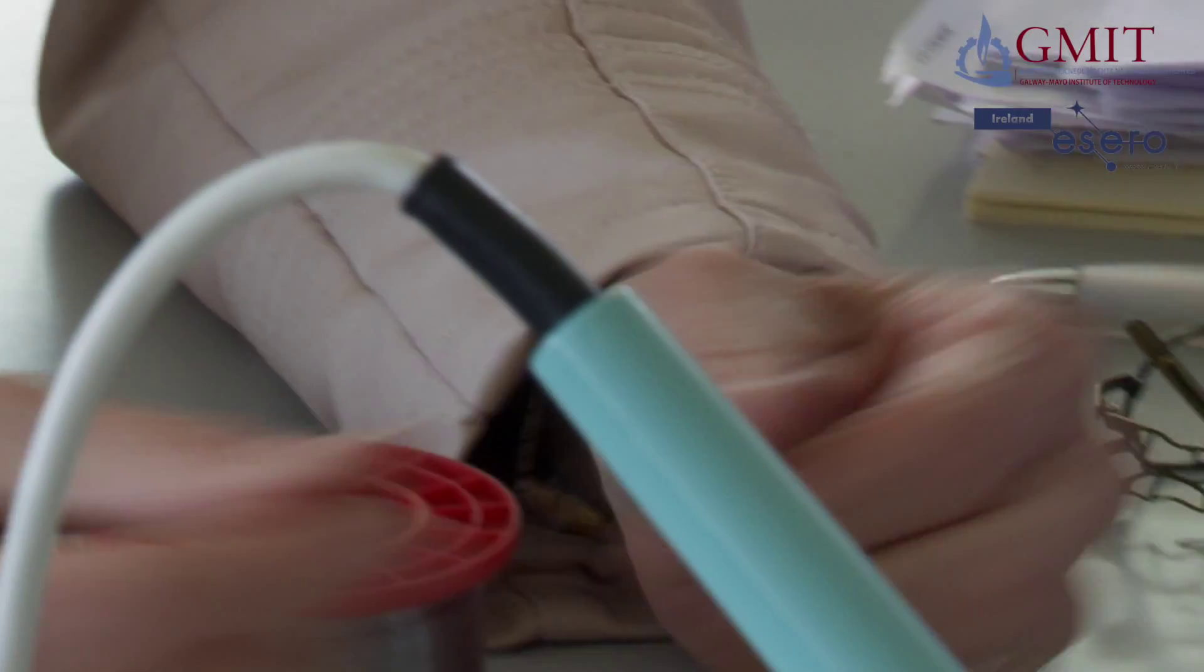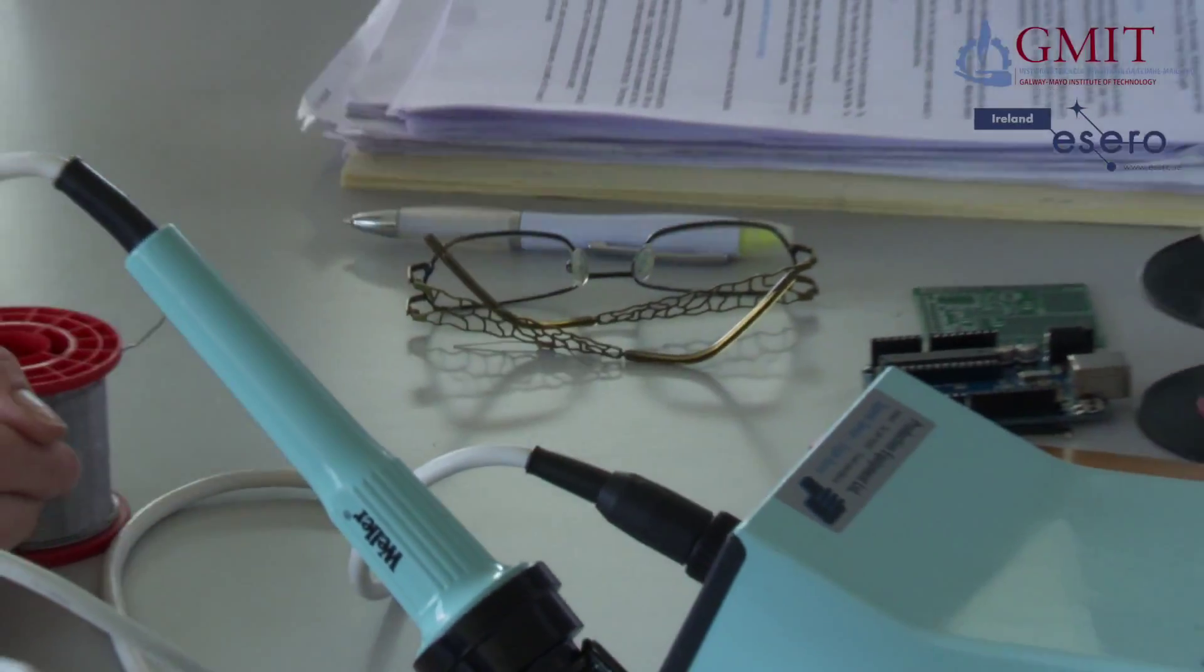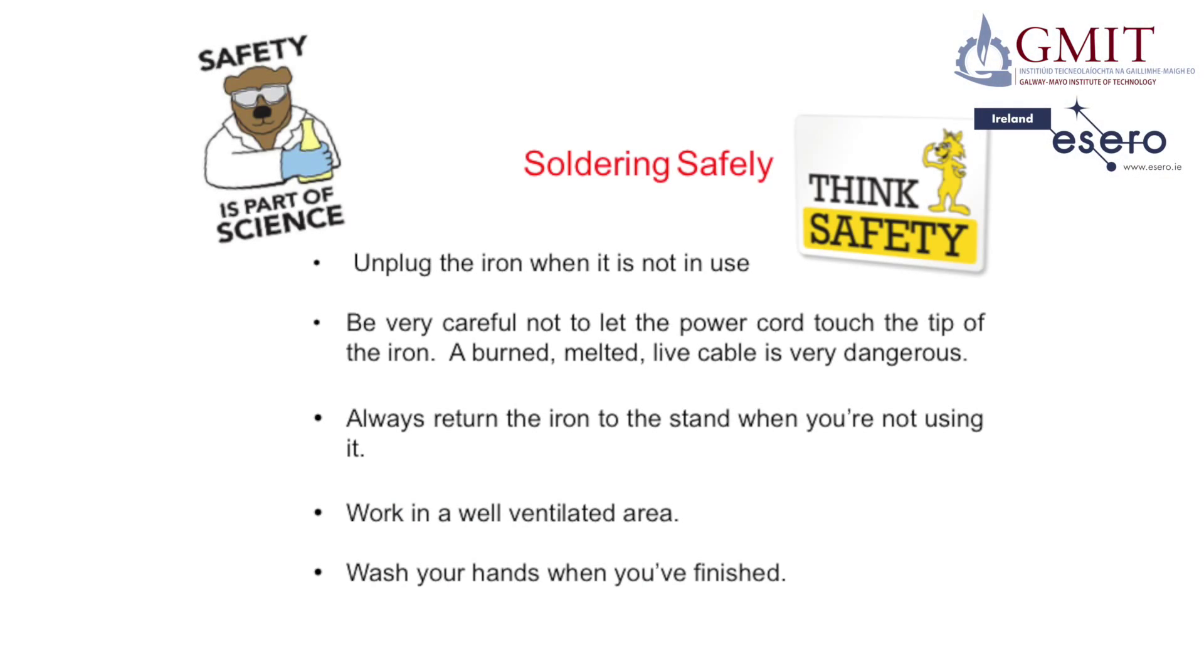To use it, we have to melt it and we use a soldering iron to do that. So here's a soldering iron. I've switched it on and let it heat up. These heat up to about 400 degrees, so they're very, very hot.